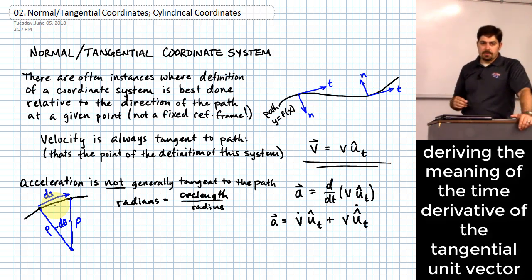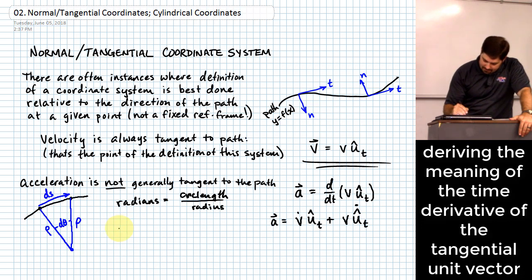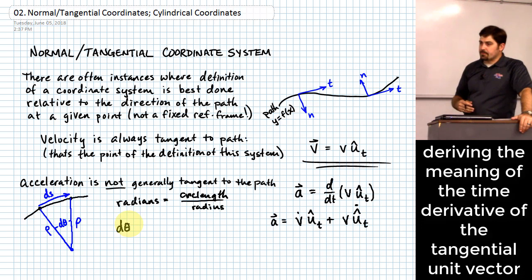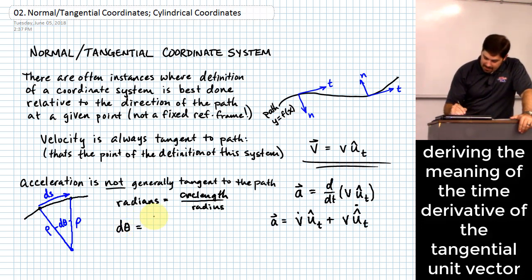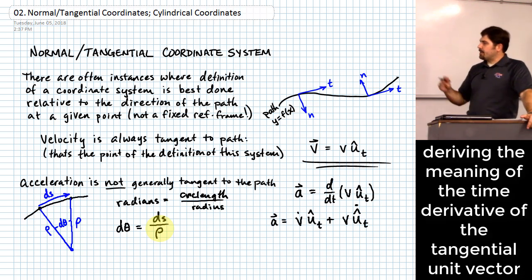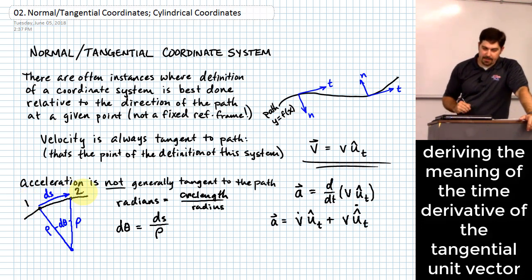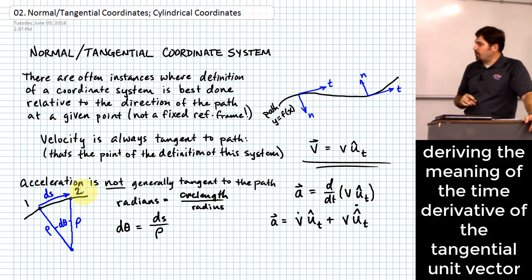We can say that D theta equals DS over rho. This is useful because we can say this happens over an infinitesimally small period of time Dt. So we can write D theta over Dt equals one over rho times DS over Dt. On the left we have theta dot — also called omega — which is angular velocity. On the right, DS/Dt is velocity along the path, which we call V. So theta dot equals V over rho.